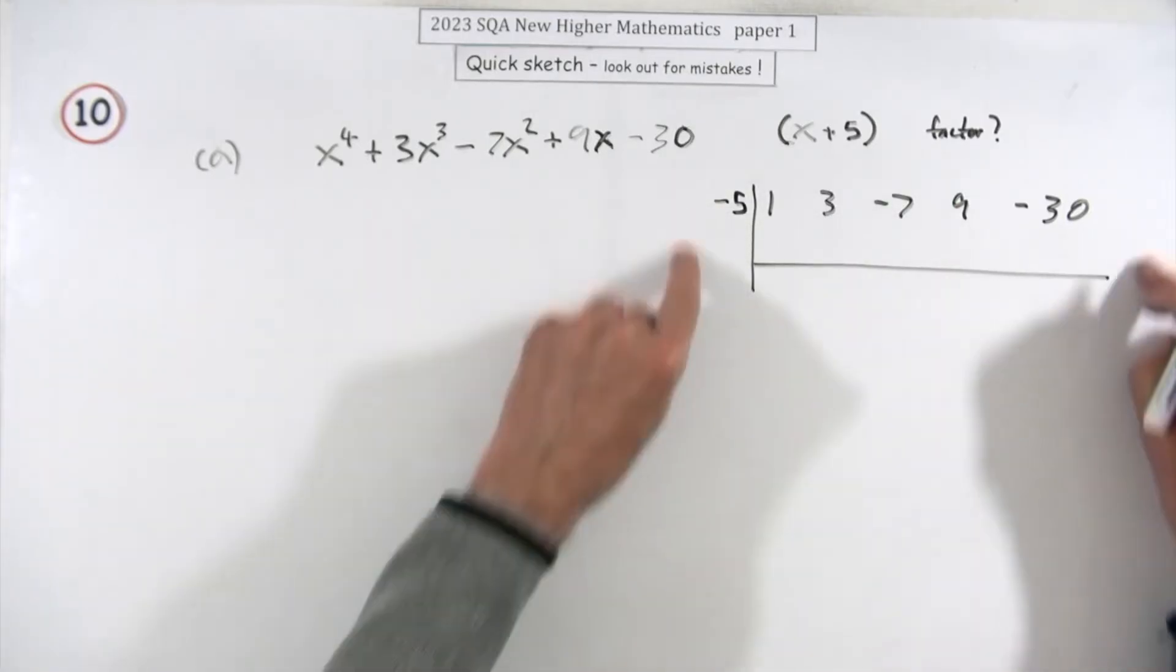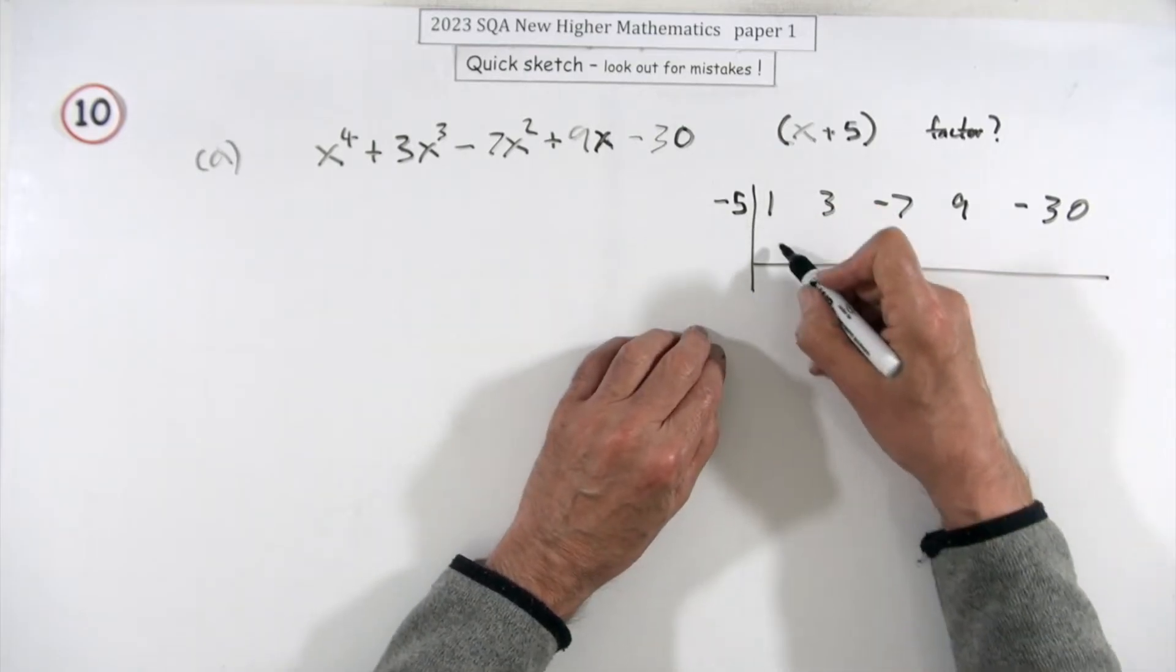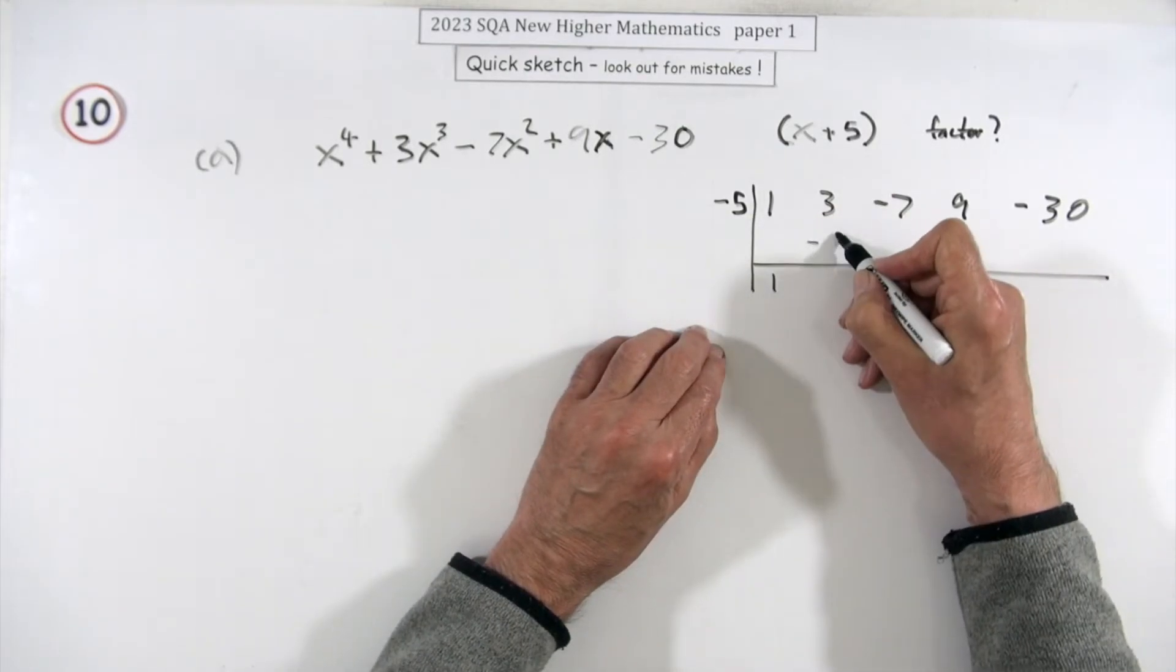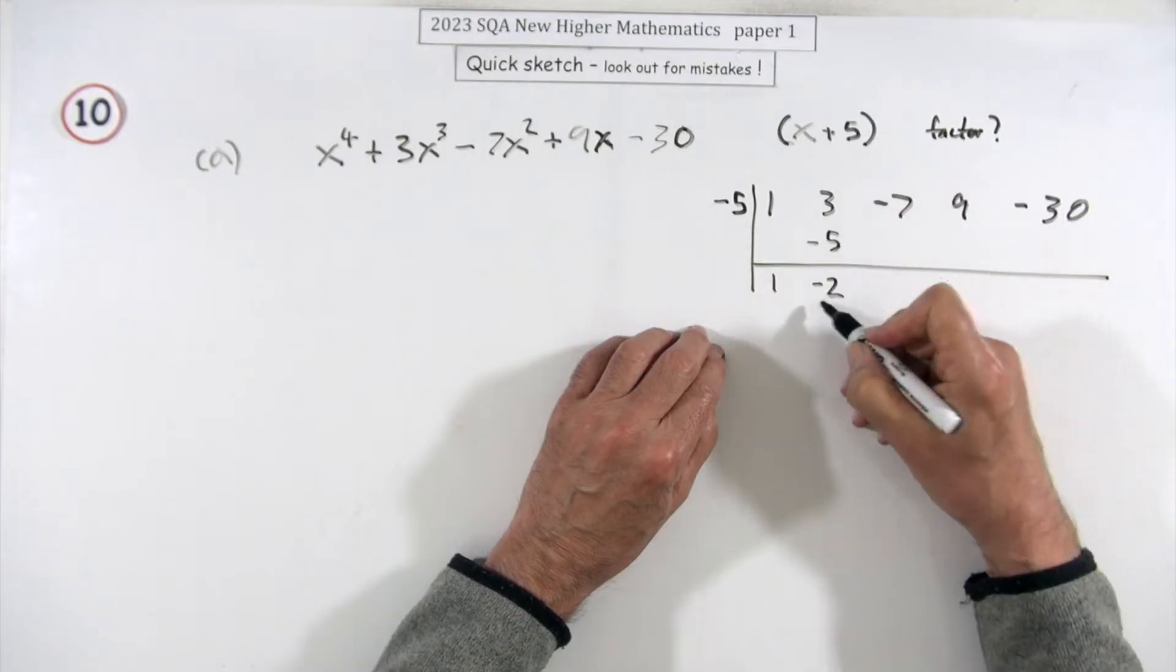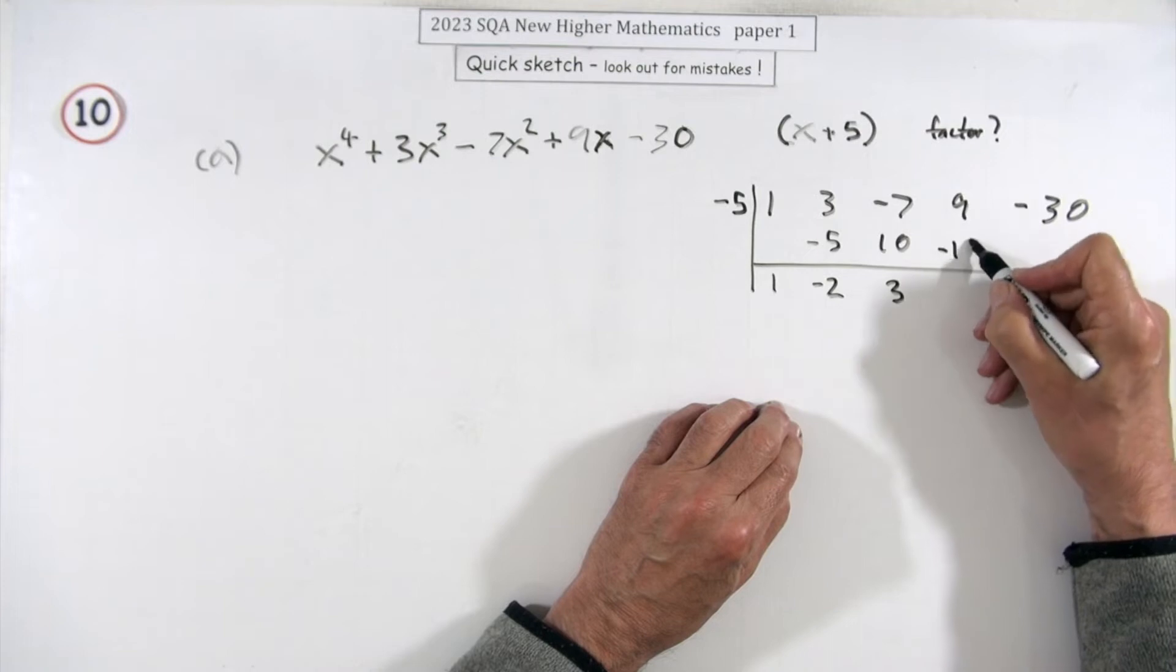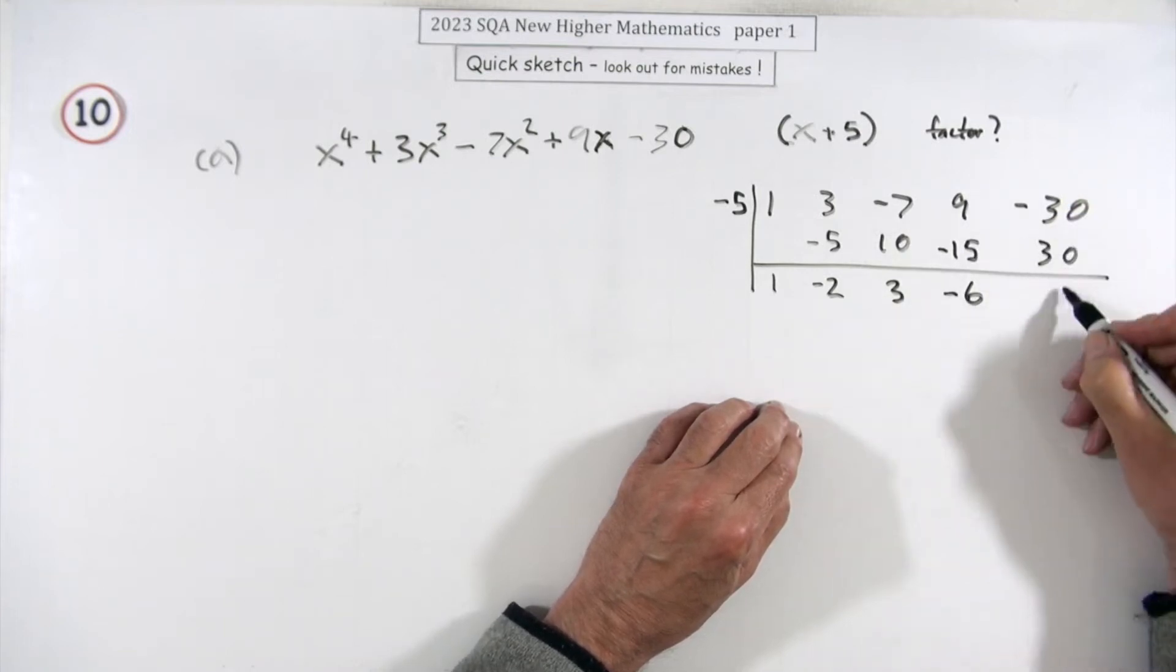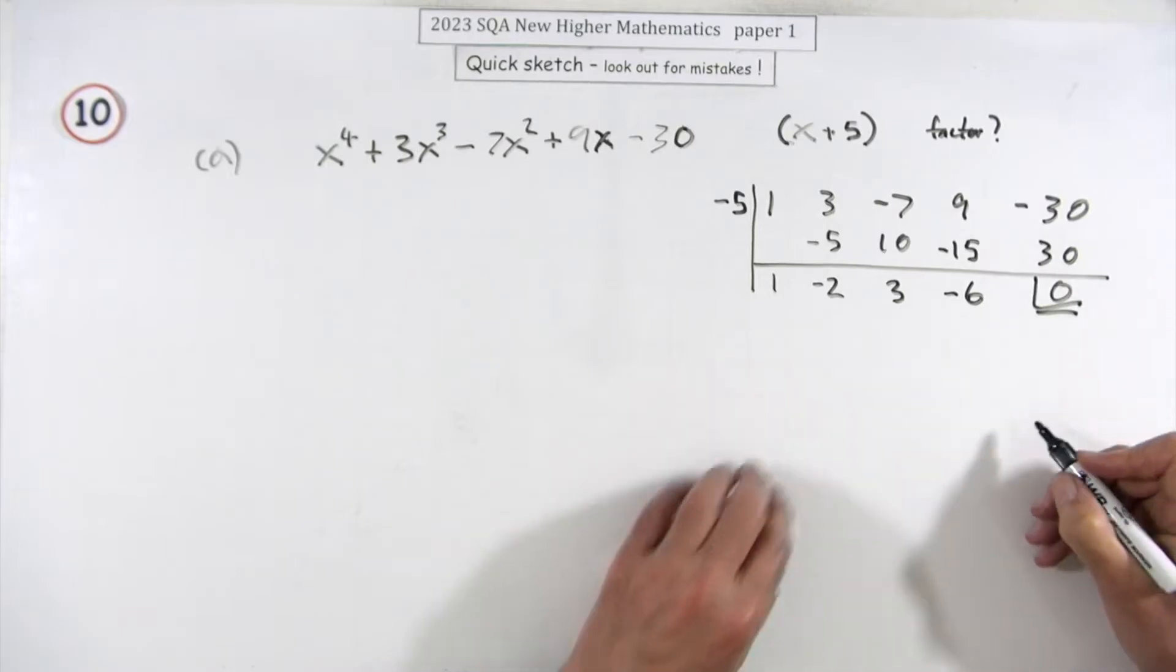Feeding that through the synthetic division: bring it down, multiply it up, add it down to get negative two. Multiply up to get ten, add it down to get three. Multiply up negative fifteen, add it down negative six. Multiply up thirty.